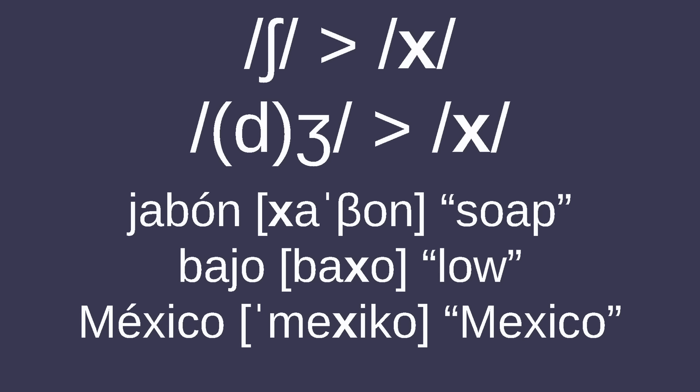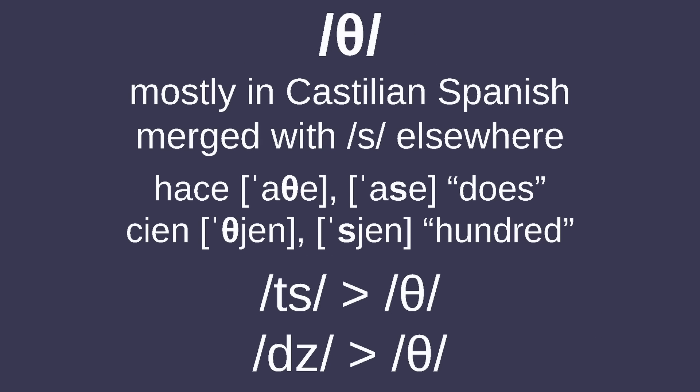Spanish lacks the sounds SH, /ʒ/, and /ʃ/, as these sounds in Old Spanish shifted to the velar fricative /x/, which is uncommon among Romance languages. There's also the dental fricative /θ/ in some dialects, particularly ones in Spain, which came from Old Spanish /ʃ/ and /z/, and later merged with /x/ in most Spanish varieties.